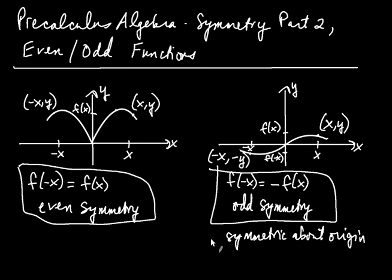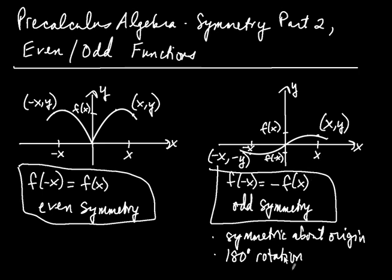People also say odd symmetry means a 180-degree rotation about the origin. If you take one part of the graph and rotate it 180 degrees, it falls onto the other part. With even symmetry, the branches look exactly the same across the y-axis — this is y-axis symmetry. Odd symmetry means it's symmetric about the origin with 180-degree rotational symmetry.